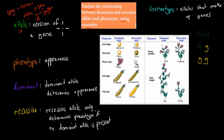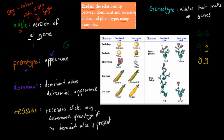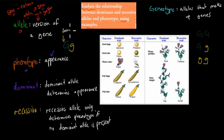Phenotype is the appearance. So for example if you have big G and small g — big G stands for green and small g stands for yellow — because big capital G is always dominant, the actual phenotype in this case will be green, because its appearance is dominated by the green one.